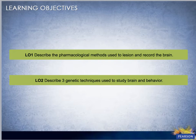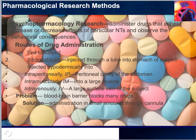In this section you will learn how psychopharmacologists manipulate and record from the brain using chemical methods, as well as describe three genetic techniques used to study brain and behavior. Psychopharmacologists are interested in administering drugs to see how the effect of particular neurotransmitters can affect people's behavior and mental processes.